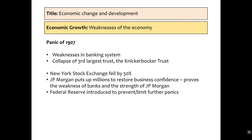Lastly, we've got the Panic of 1907, caused by weaknesses in the banking system and the collapse of the third largest trust — the Knickerbocker Trust. As a result, the New York Stock Exchange fell by 50% over a very short period, and it was only bailed out by JP Morgan putting up millions of his own money to restore business confidence. As a result of this, Woodrow Wilson introduced the Federal Reserve to limit these panics and try to prevent them in future.